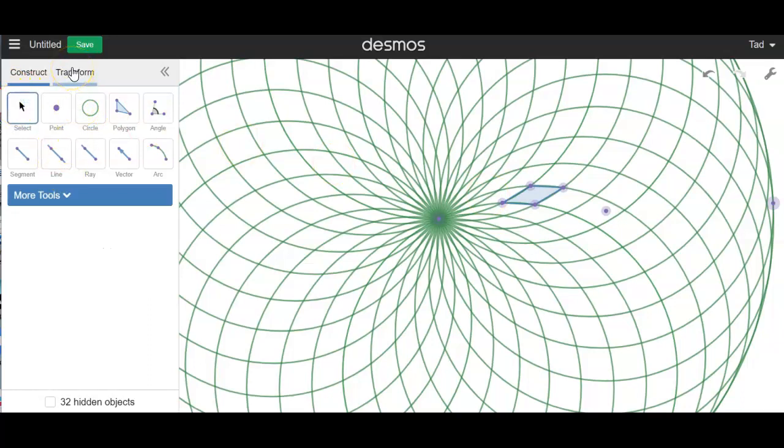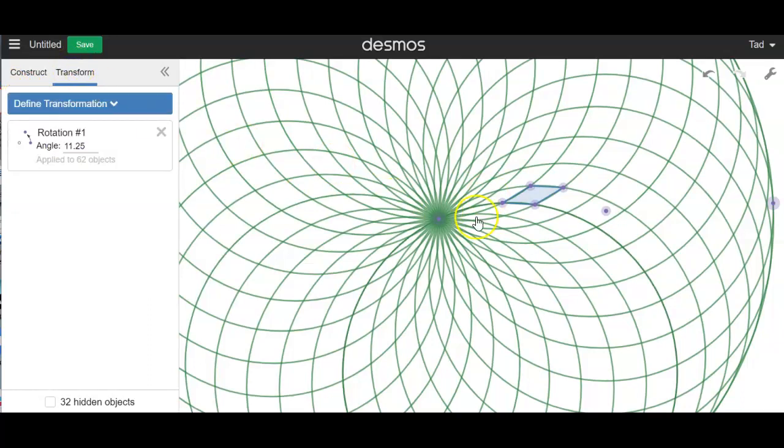Now, I'm going to go to my transform. And I'm going to select that polygon. Not the point. There. The polygon. That has hit apply to our rotation. And guess what? I rotate that thing 31 times around the center of our circle.